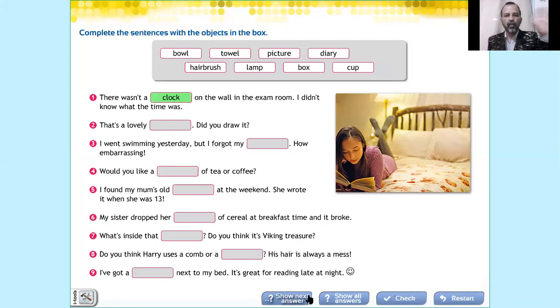For example, the first one is: 'There was a ___ on the wall in the exam room. I didn't know what the time was.' - A clock. Number two: 'That's a lovely ___. Did you draw it?' - Picture.